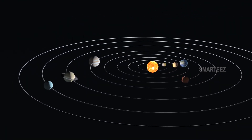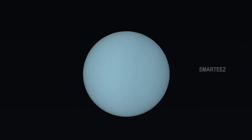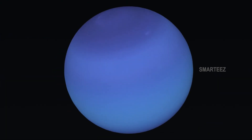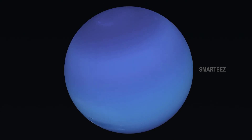The seventh planet in the solar system is Uranus. It's an icy planet and is known for rotating on its side. That's Uranus. The eighth planet in the solar system is Neptune. Neptune was named after the Roman god of the sea for its blue color. This is the farthest planet away from the sun. It's also a very cold icy planet. That's Neptune.